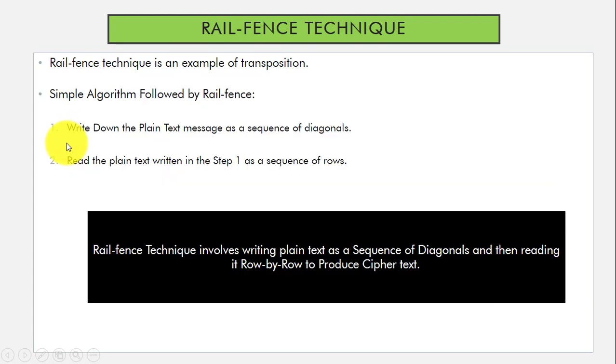Step 1, write down the plain text message as a sequence of diagonals. After that, in step 2, read the plain text written in step 1 as a sequence of rows.